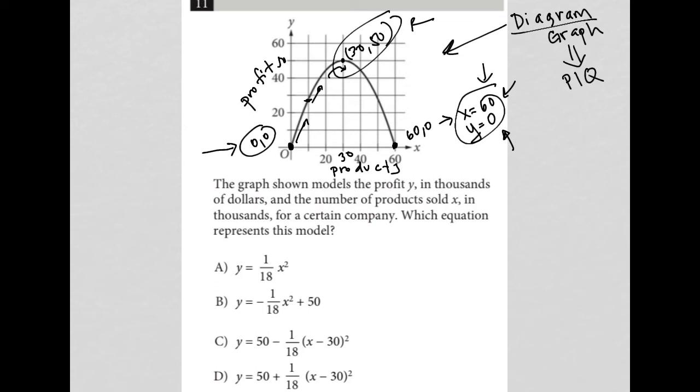So let's see, with choice A, if I were to plug in 60 for X, I would not get Y equals zero. So that's gone. For choice B, if I were to plug in 60 squared or 60 for X, I would also not get, let's see, let's make sure 60 squared is 3,600. Yes, I would not get 1/18th of 3,600 is not 50. So that's gone.